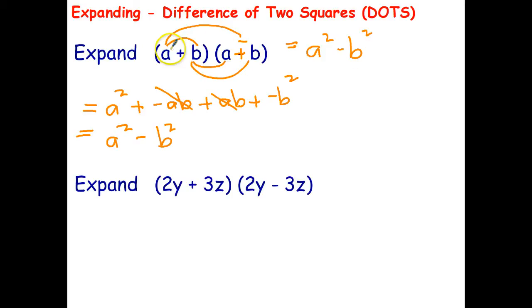So that's a quick way to multiply anything that fits that pattern. So the first term has to be the same, the second term has to be the same, and one's plus and one's minus. The minus could be first, it doesn't matter about the order, and if that's the case you can write the answer down in just one step.